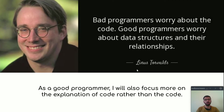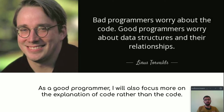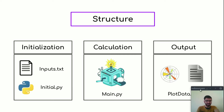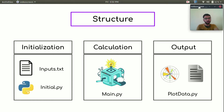This is a quote from Linus Torvalds: 'Bad programmers worry about the code. Good programmers worry about data structures and their relationships.' So in this presentation I will focus more on the explanation part of the code rather than the actual code, so you can understand what is happening inside and recreate it in different programming languages. Our code will stand on three main pillars: structure, communication, and speed.